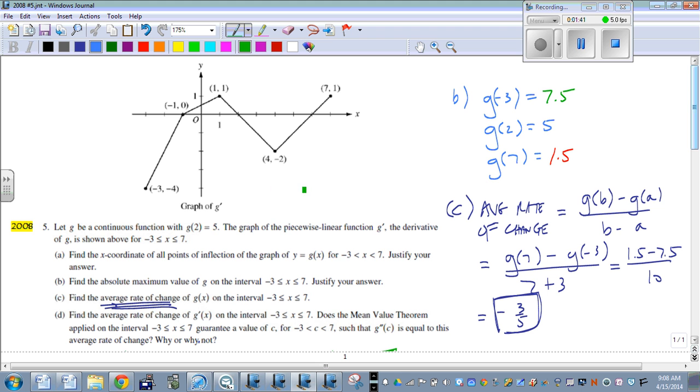So this is our function, the derivative of G. Is it continuous? Are there any holes, jumps, asymptotes, anything like that? Oh yeah, it's continuous, right? No stops, jumps, no holes, anything like that. So it's continuous.